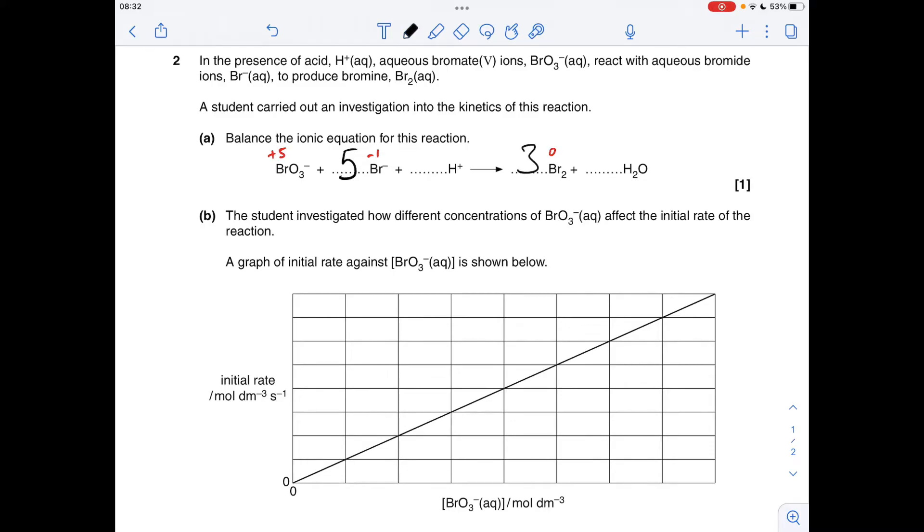So we need obviously a three in front of the Br2 because we've got six Br's on the left. And then if we use the oxygens to get the waters balanced, so three O's on the left, so we need three H2O's. And now just finish off with the H pluses, so we've obviously got six H's on the right, so we need six H pluses on the left.